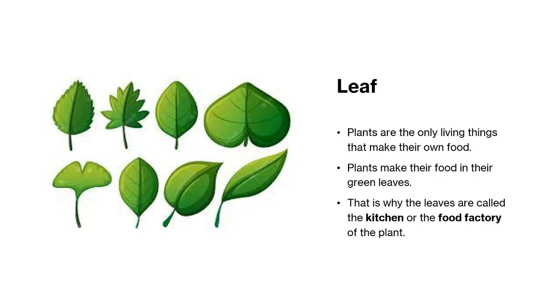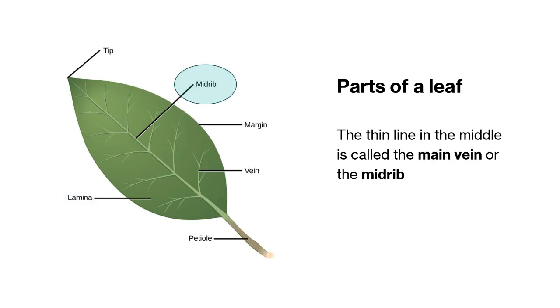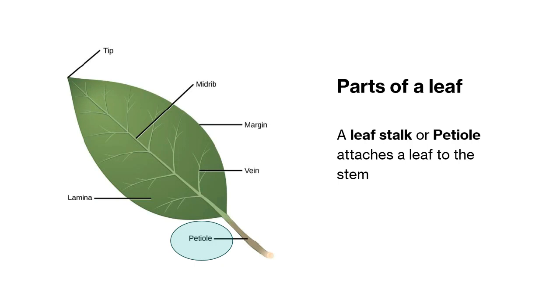Now what are the parts of a leaf? The flat and broad part of the leaf is called the leaf blade or lamina. The thin line in the middle is called the main vein or the midrib. A number of very fine tubes branch out from the midrib. These are called veins. Veins bring water and minerals to the leaf from the roots and carry food from the leaf to the other parts of the plant. A leaf stalk or petiole attaches a leaf to the stem.